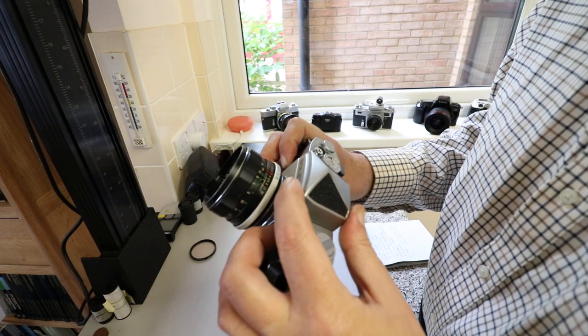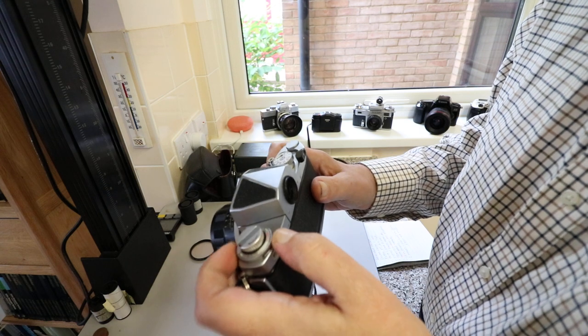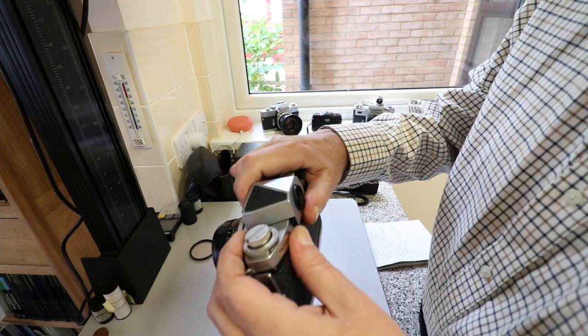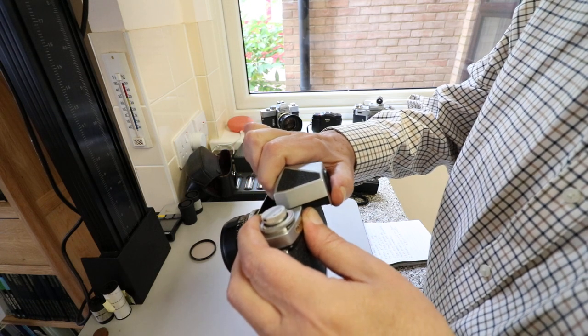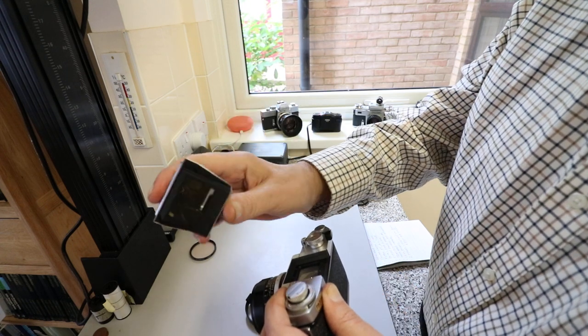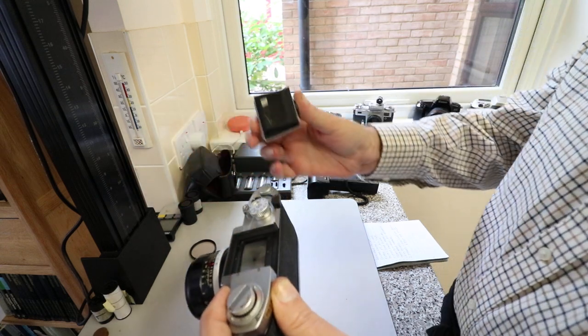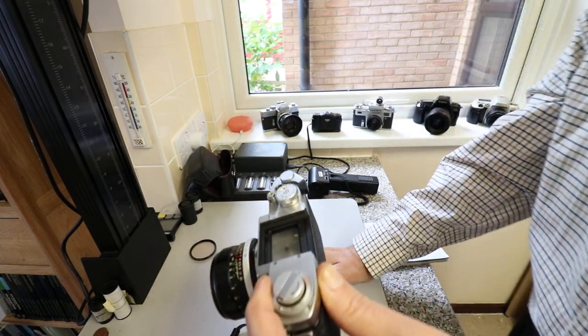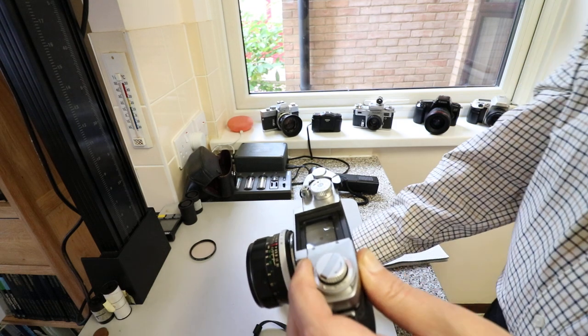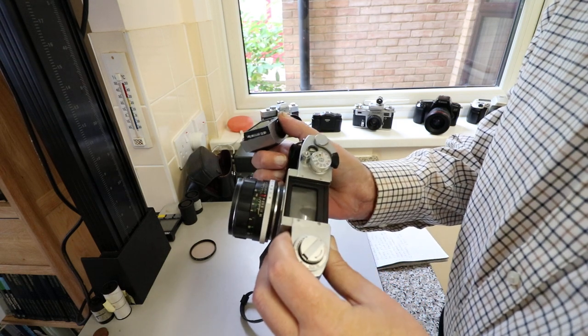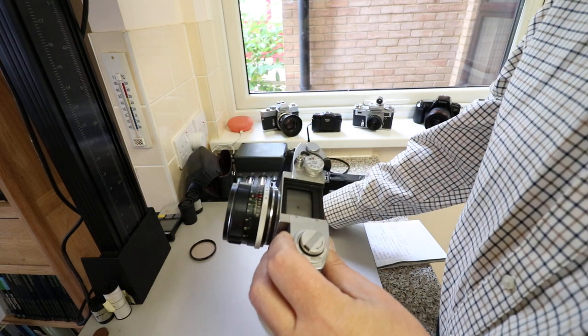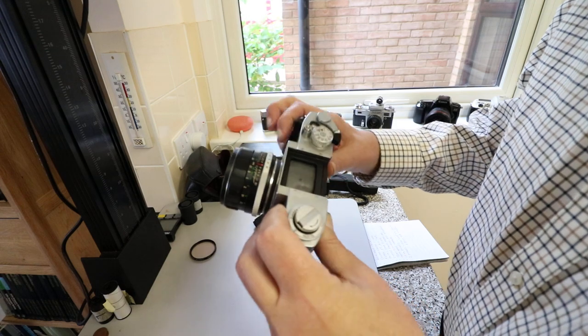The interesting thing about these cameras is they have a removable pentaprism. If we turn this dial slightly anti-clockwise, we can slide the prism out. I've never actually seen any, but I understand there are waist level finders and magnification finders available.